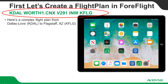Here's a pretty complex flight plan that I downloaded - a clearance from Dallas Love to Flagstaff. This is the Worth One departure to the Corona VOR CNX, to Victor 291, to the Winslow VOR INW, and on to the airport KFLG. At the end of this presentation I will also have a live video, but I wanted to show you with screenshots and printed instructions.